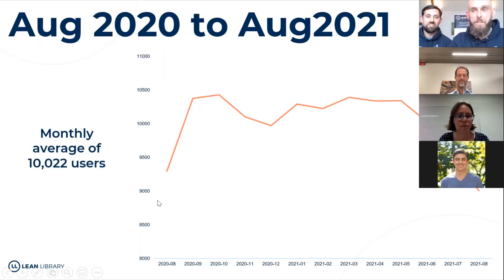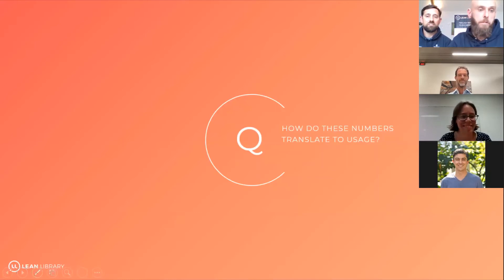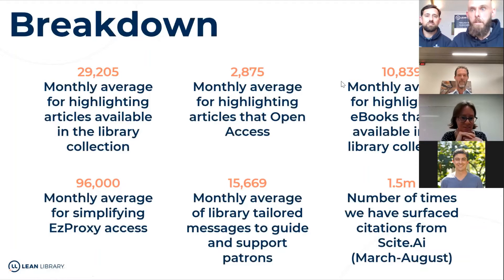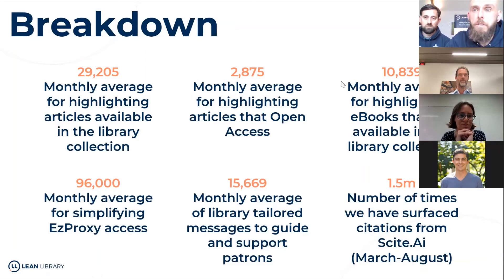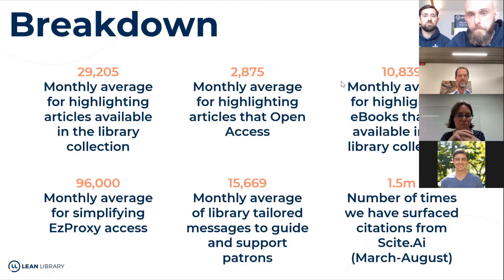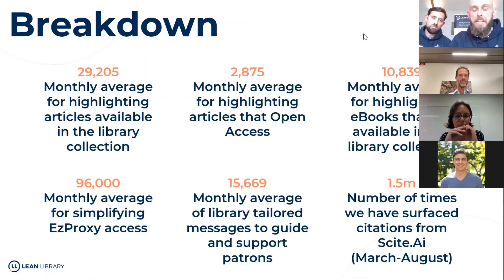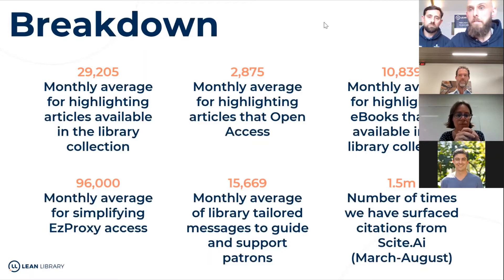Looking at the next slide — a breakdown of feature usage, how these numbers translate to usage: on a monthly basis, we highlight 29,225 times to indicate an article is available within the Erasmus collection. For example, when a user arrives at a paywall for an article, we surface the pop-up to say the article is available in a different location. On a monthly basis, open access highlights: 2,875. And eBooks — a trend most will see increasing — 10,839 highlighted books available in the collection, surfaced when browsing Google Books or Amazon.